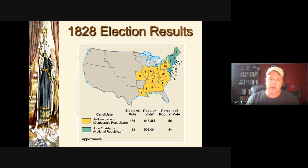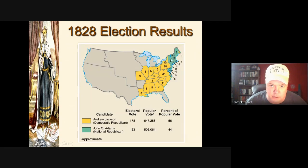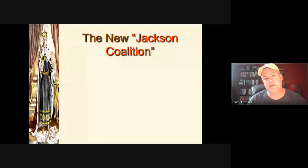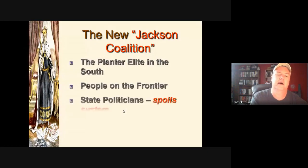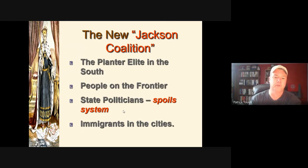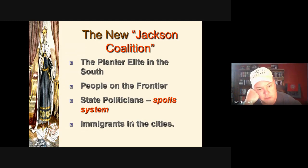The 1828 election was not a purely sectional result — Jackson did extremely well in both the South and the West, as well as parts of the North including Maine, New York, and Pennsylvania. Jackson triumphantly took the office his supporters believed was due to him in 1824. The Democratic coalition that emerged — planter elites, frontiersmen, yeoman farmers, spoilsmen, and immigrants — would dominate until the election of Abraham Lincoln.